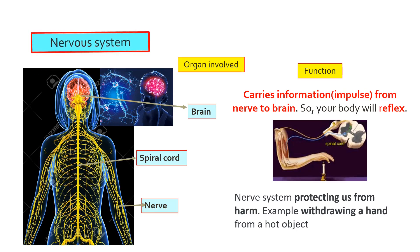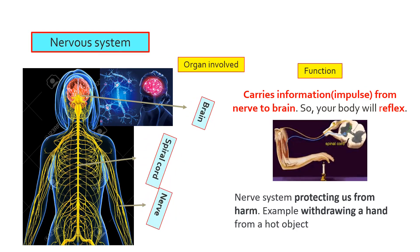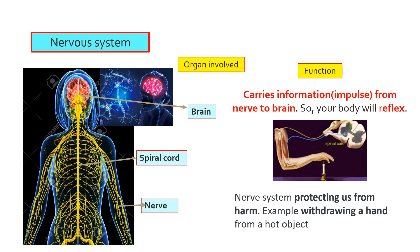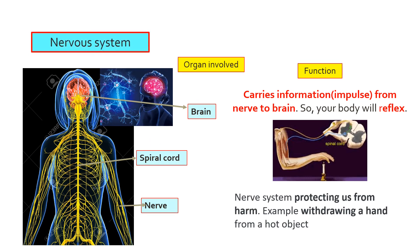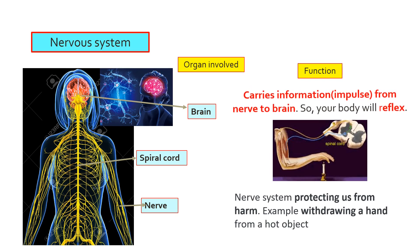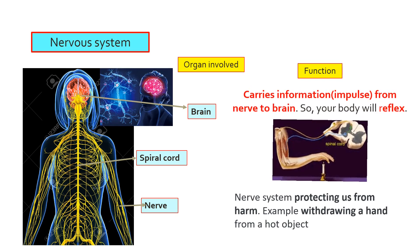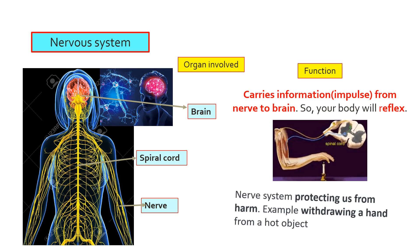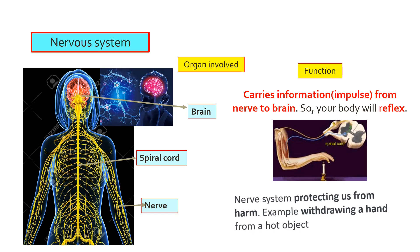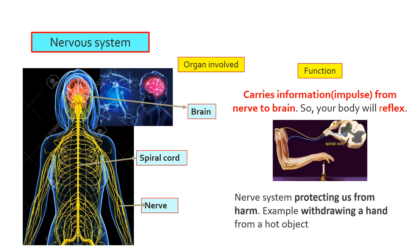Nervous system: organs involved are the brain, spinal cord, and nerves. The nervous system carries information from nerves to the brain so your body will respond. It protects us from harm — for example, withdrawing a hand from a hot object.